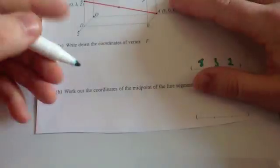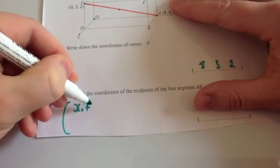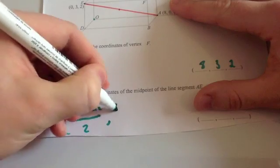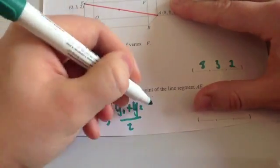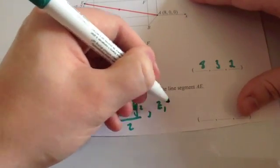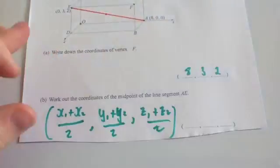So the method is, the midpoint is x1 plus x2 divided by 2, y1 plus y2 divided by 2, and z1 plus z2 divided by 2. So that's how you find the midpoint of a line segment.